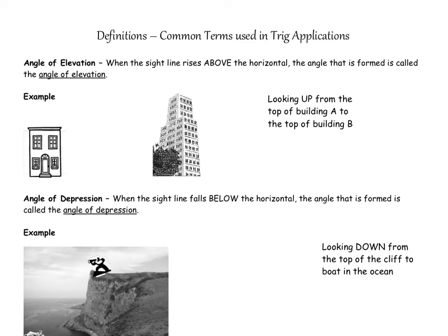The first one is what we call the angle of elevation. This is the angle when the sight line rises above the horizontal — it's the angle formed between the horizontal and the sight line. So if this line is the horizontal and this is the sight line, where you're looking, then this angle in between here is what we call theta, or the angle of elevation.